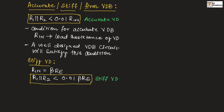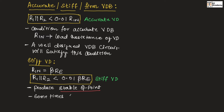The stiff voltage divider will produce a stable Q point. However, sometimes the stiff voltage divider design will produce small values of R1 and R2, which can cause some problems.